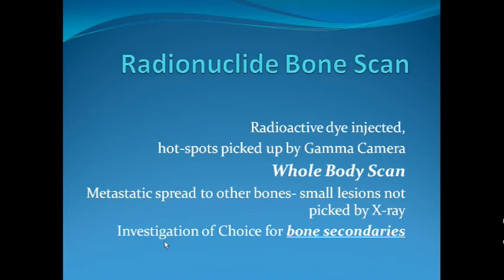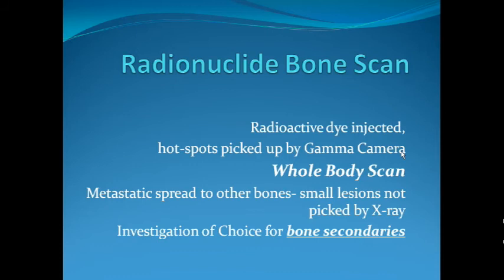To locate pulmonary occult metastasis we get a CT chest done. To locate tumour seeding in other bones we get a radionuclide bone scan, which has the benefit of being a whole-body study — unlike the regional nature of MRI or CT. A radioactive dye is injected and hot spots are detected by the gamma camera, allowing us to see exactly where the tumour has spread and whether it has metastasized to other bones.